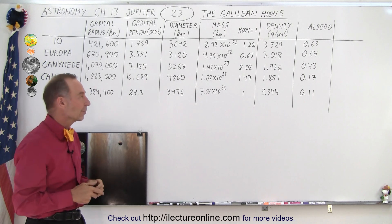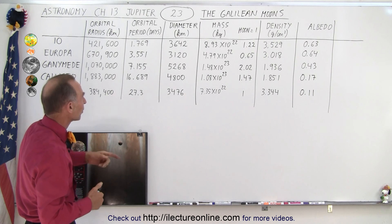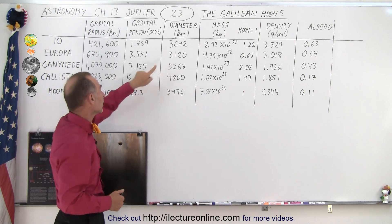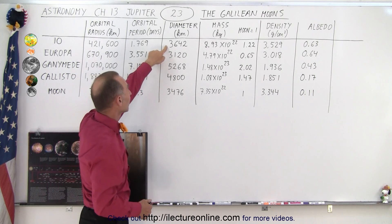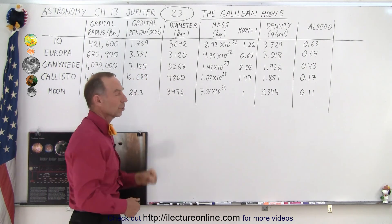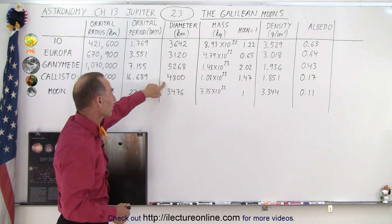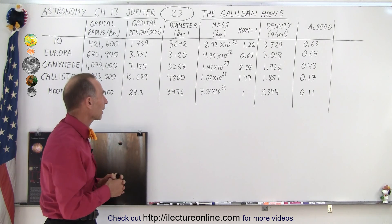How about size-wise? It turns out that three of the four moons of Jupiter are actually larger than our own moon. Notice only Europa is a little bit smaller than our moon. All the other moons, Io, Ganymede, and Callisto are considerably larger, especially Ganymede and Callisto. And Ganymede is so large that it's actually larger than the planet Mercury.